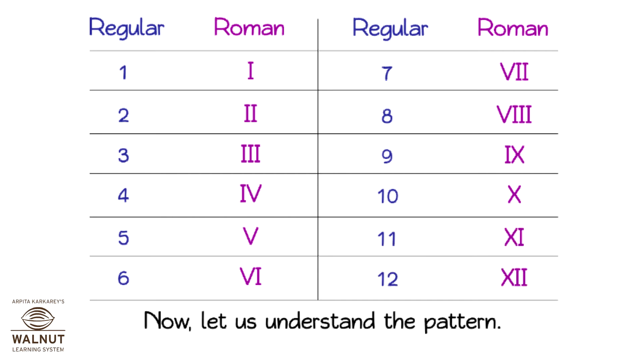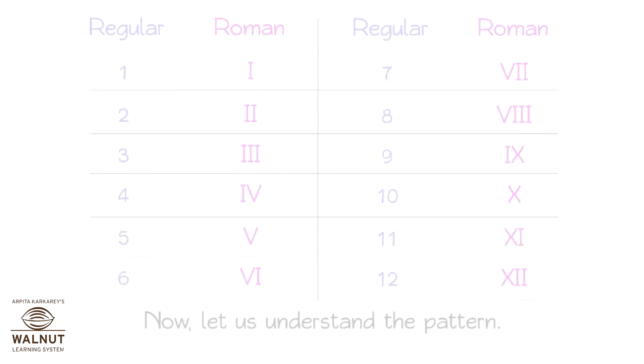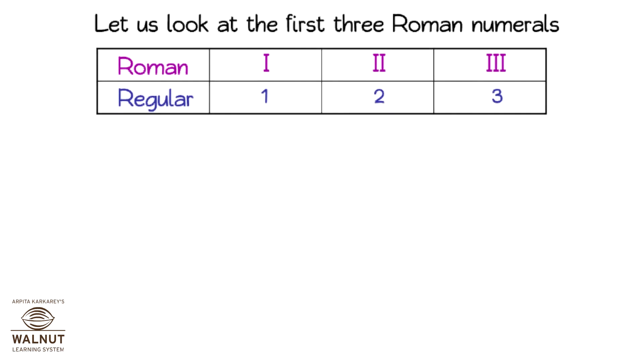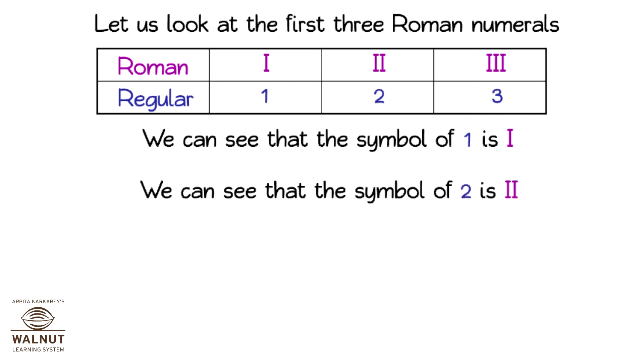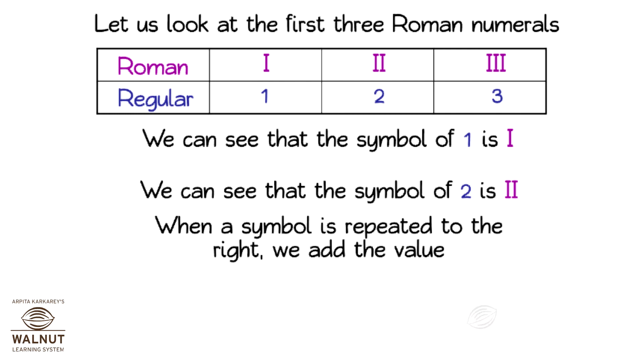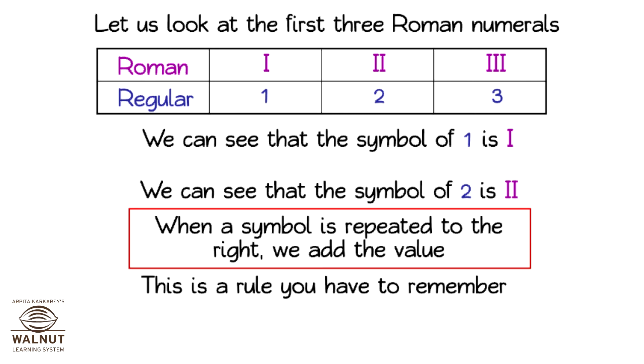Now, let us understand the pattern. Let us look at the first three Roman numerals. When a symbol is repeated to the right, we add the value. This is a rule you have to remember. So, double I means 1 plus 1 is equal to 2.